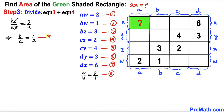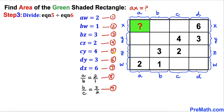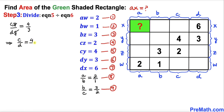Now dividing equation 5 by equation 6: cy divided by dy equals 4 over 3. The y's cancel, so we get c divided by d equals 4 over 3. Let me call this equation 10.